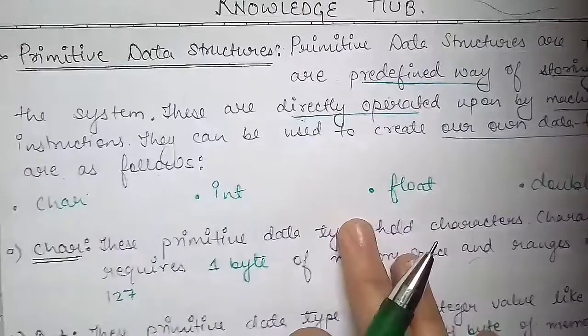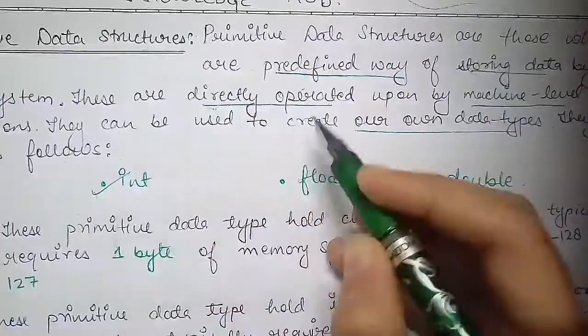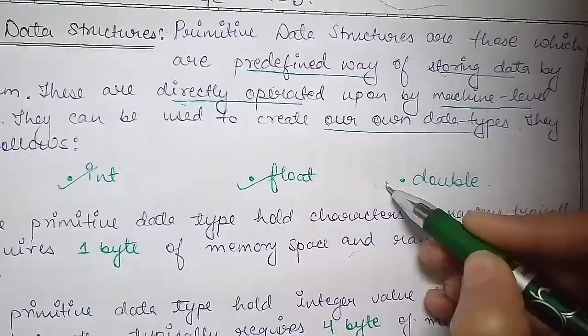There are basically four types: first one is char, then int stands for integer, float, and then last one is double.